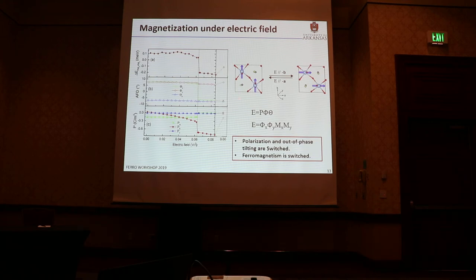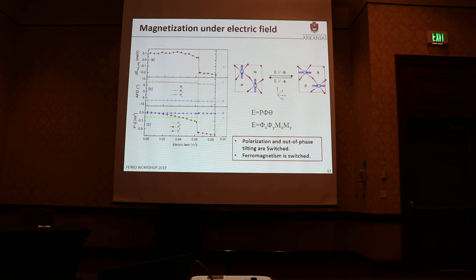Here we show that the spin is on B, and here is on A. We can use the electric field to switch this to another magnetization configuration. The oxygen tilting is switched, because from this formula, when A changes sign, phi must also change. Phi changes, and from this formula, the ferromagnetization N must also change.